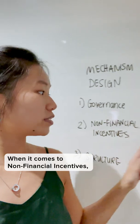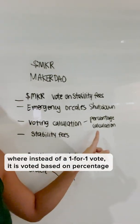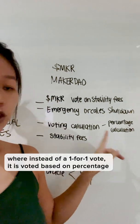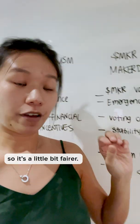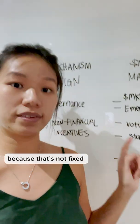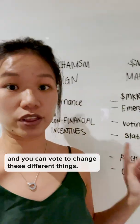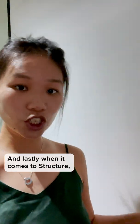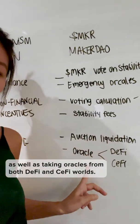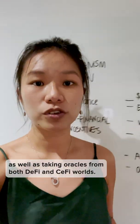When it comes to non-financial incentives, we're looking at voting calculation where, instead of a one-for-one vote, it is voted based on percentage — so it's a little bit fairer. You can also vote on stability fees because those are not fixed, and you can vote to change these different things. And lastly, when it comes to structure, we're looking at the auction liquidation structure, as well as taking oracles from both the DeFi and CeFi world.